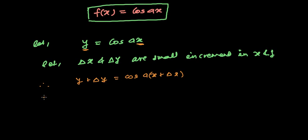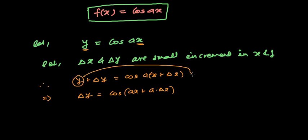Alright, so in the next step I can write delta y equals to cosine of (ax + a·delta x), and this y will go to the other side minus y. And instead of writing y I can write cosine of ax.